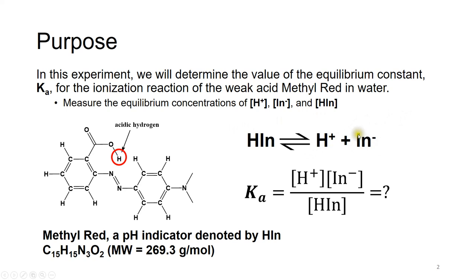In⁻ is the basic form of methyl red. What's the molecular structure of methyl red? It's really complicated, but we don't have to pay attention to the detail except for this hydrogen. When we place this organic molecule in water, this H may leave the molecular structure and become H⁺, and then this structure is negatively charged — it's In⁻, the basic form of methyl red.